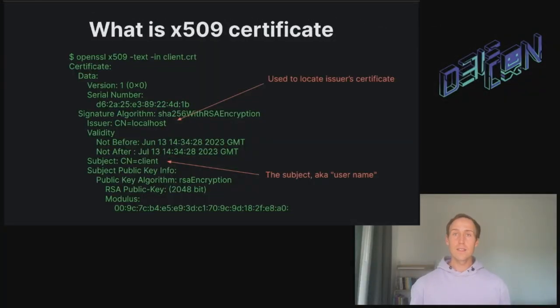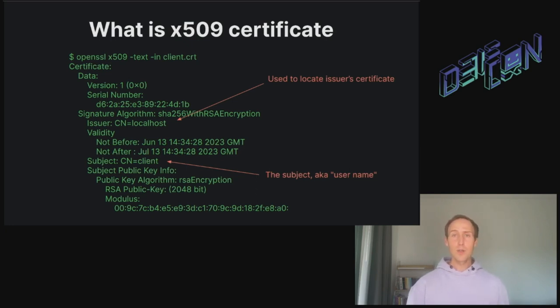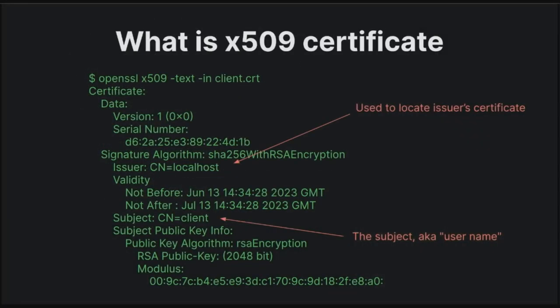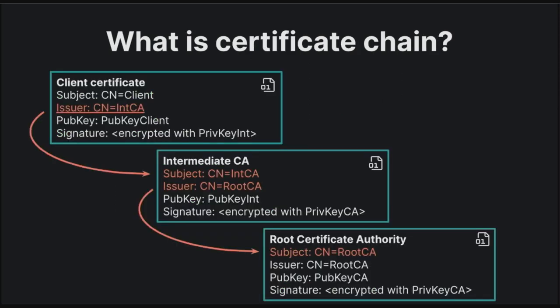So what exactly is a certificate? Generally speaking, it's a blob of binary encoded data. The most important fields are the subject, the issuer, and the public key. Subject usually defines a username or host name, and similar to JSON web tokens, the certificate is signed by the issuer's private key so the data inside cannot be tampered with. The issuer field points to another certificate which signed this certificate. A sequence of certificates signing each other forms a certificate chain.